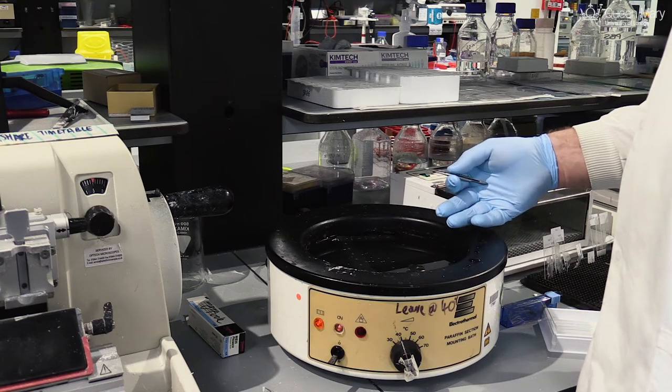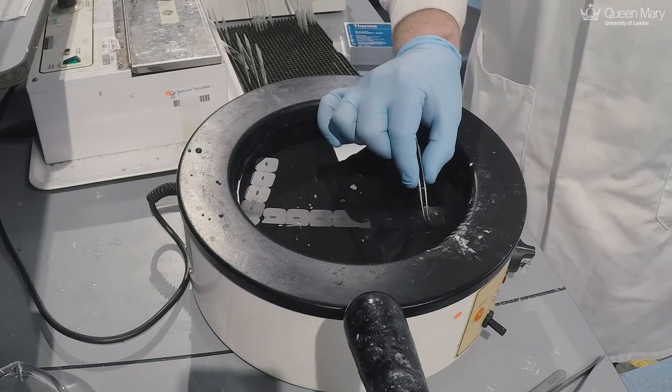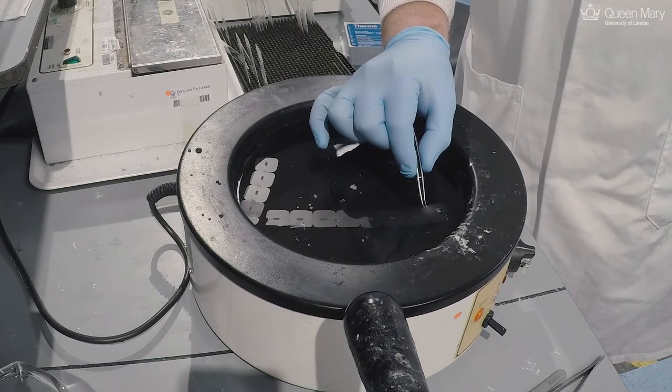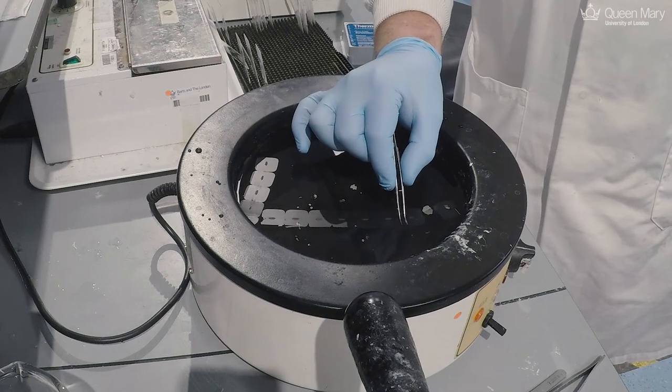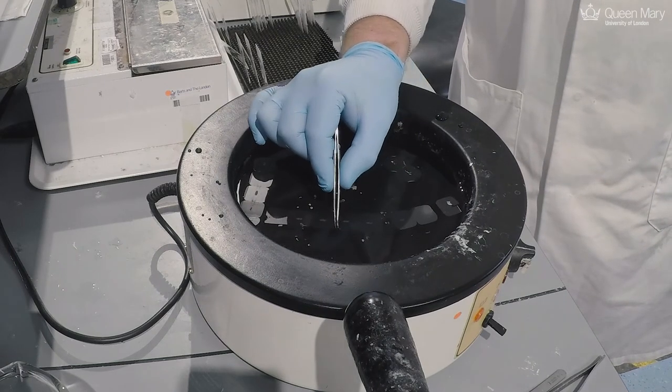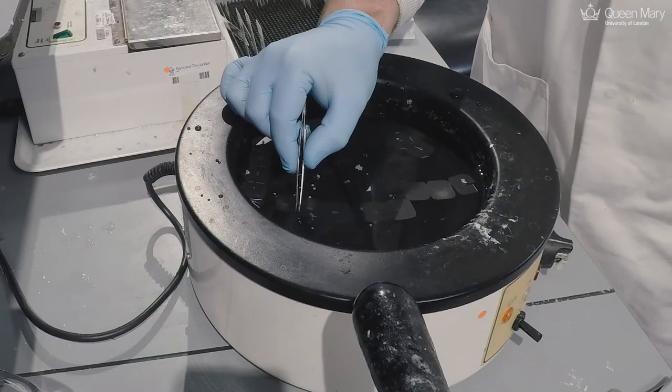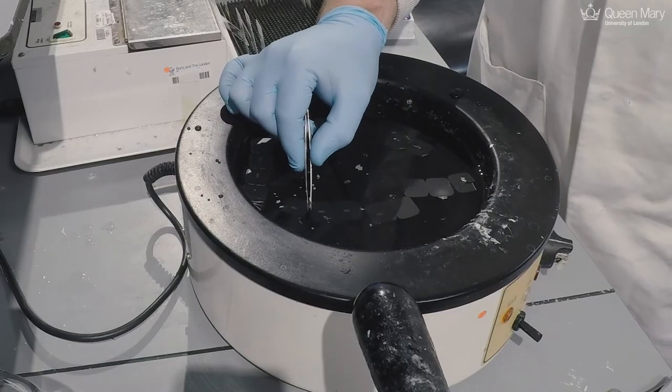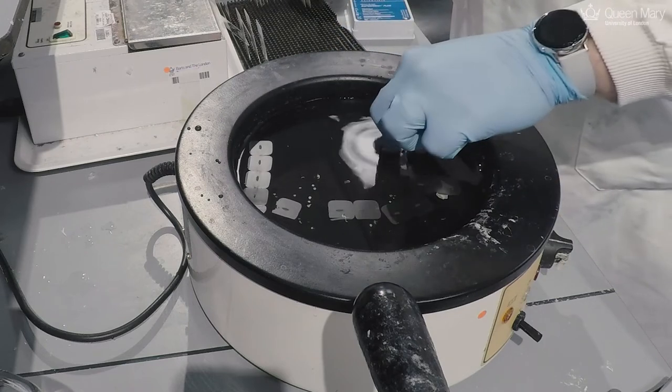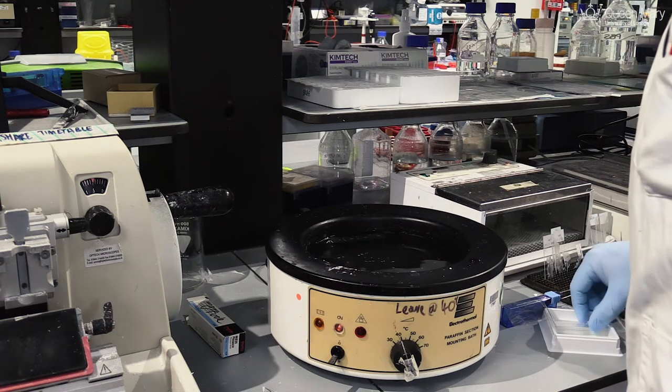So we want to separate the sections and just keep the nice ones. Any ones that don't look particularly nice—they've got holes in them or missing bits of tissue—we can remove.